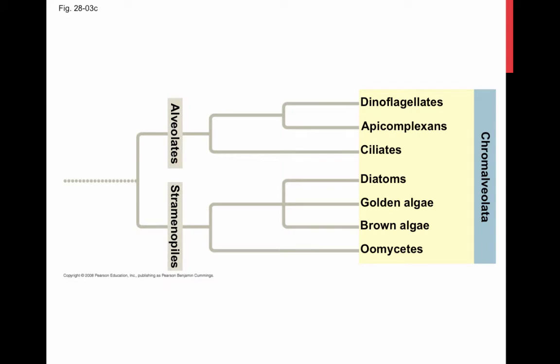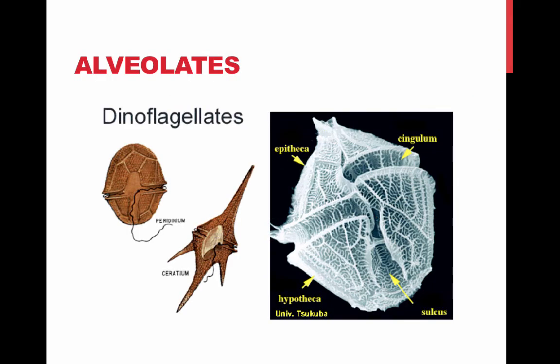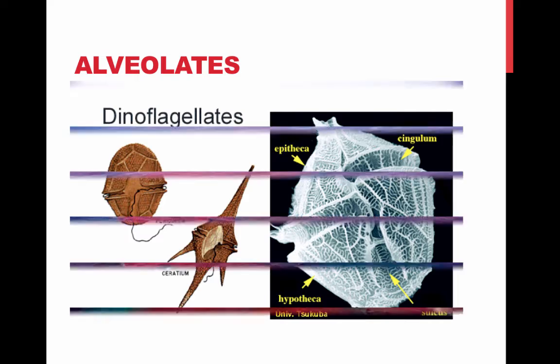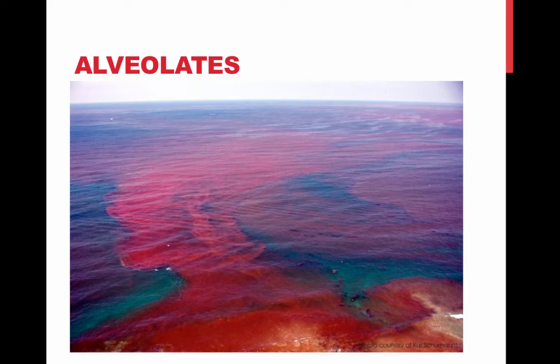Chromalveolates may have originated by secondary endosymbiosis. This clade is controversial and includes the alveolates and the stramenopiles. Members of the clade Alveolata have membrane-bound sacs just under the plasma membrane. This group includes the dinoflagellates, apicomplexans, and ciliates. Dinoflagellates are a diverse group of aquatic mixotrophs and heterotrophs, and there are dinoflagellate blooms that cause the toxic red tide.